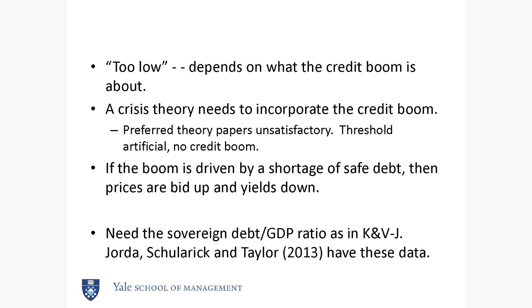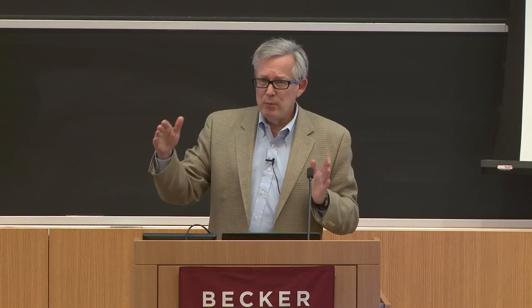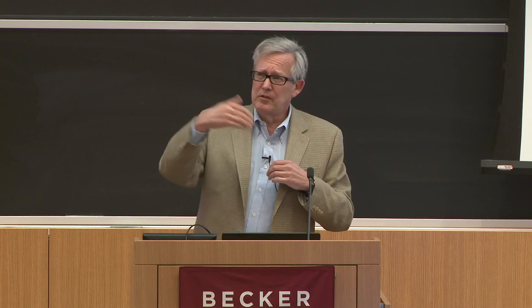My three recommendations: first, sort out the central bank issue; second, look at the Reinhardt-Rogoff severity measure; third, investigate the convenience yield mechanism. Financial crises are different — the specific information here is that spreads and credit growth are positively correlated unconditionally, but conditional on five years prior to a crisis they're negatively correlated. What I'm interested in is: what's the correlation over the period where there's a credit boom that doesn't end in a crisis? That would be interesting, and gets at the issue of whether agents can distinguish between these two kinds of credit booms.